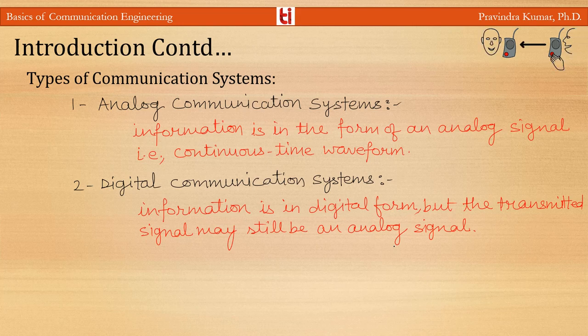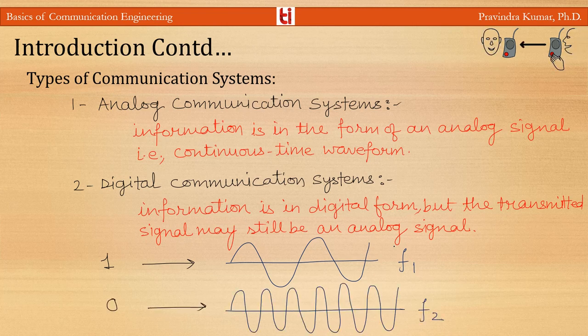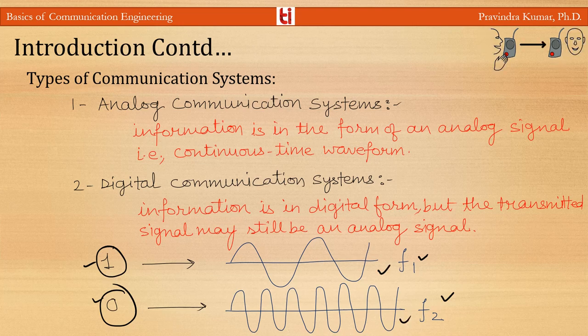For example, we may use a sinusoidal signal of one frequency to represent binary one and a sinusoidal signal of a different frequency to represent binary zero. So here, one is represented by an analog signal with frequency f1 and zero is represented by an analog signal with frequency f0. Even though the message signal is in digital form, the transmitted signal is an analog signal. The source information may be digital or analog, and at the transmitting end it may also be in analog or digital form.